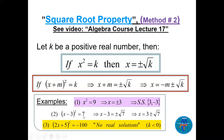For x minus 3 all squared equals 7, since k is positive, we take the square root of both sides: x minus 3 equals plus or minus square root of 7, so x equals 3 plus or minus square root of 7. However, if k is negative — for example, two x plus five all squared equals minus 100 — there are no real solutions, because the square root of a negative number is imaginary.